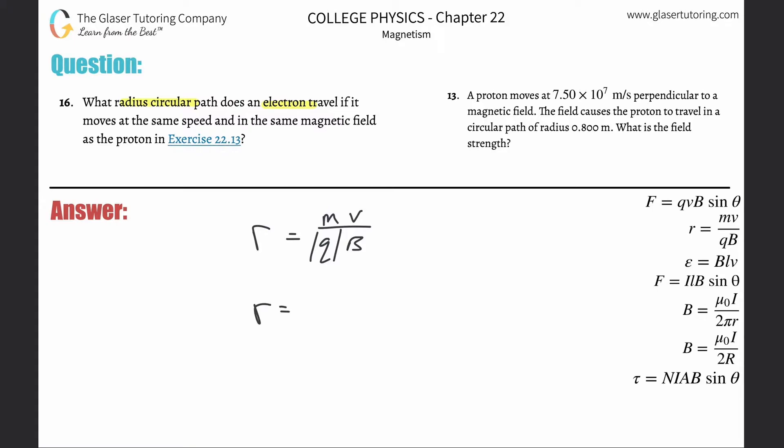In this problem, instead of talking about a proton, we're now talking about an electron. So the mass of an electron is different from that of a proton - it's 9.11 times 10 to the minus 31 kilograms. The velocity is the same as they told us, 7.5 times 10 to the seventh meters per second.